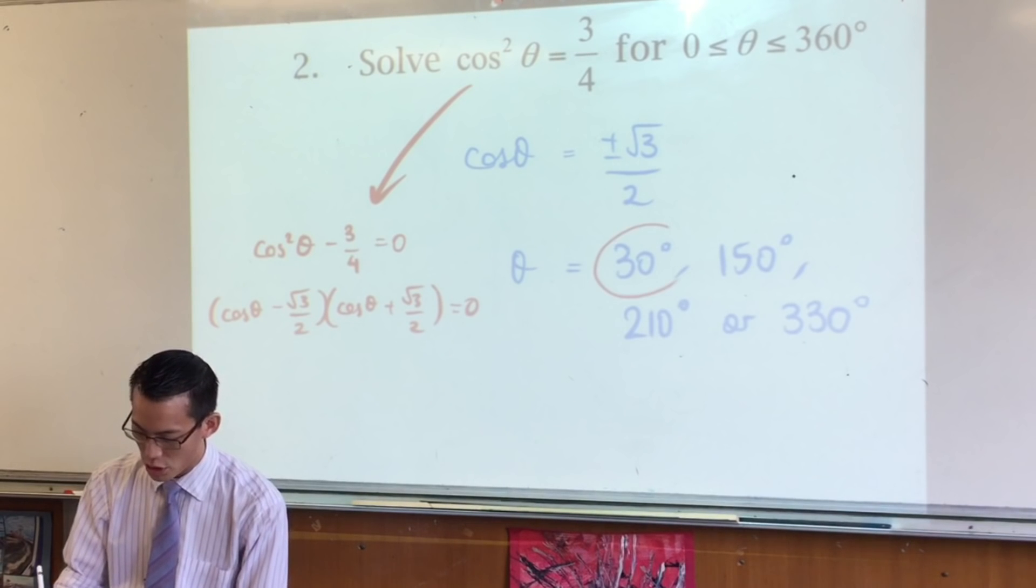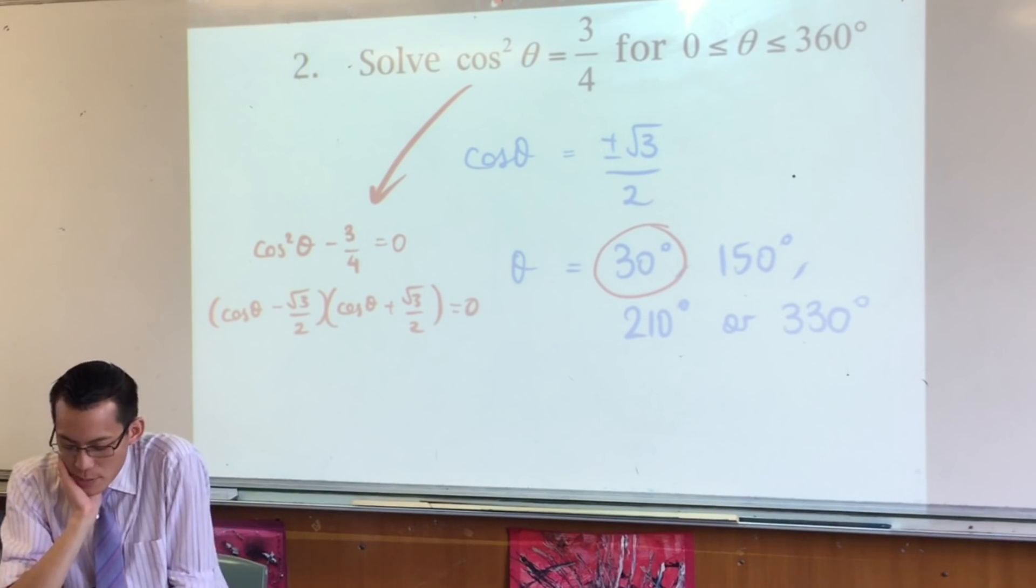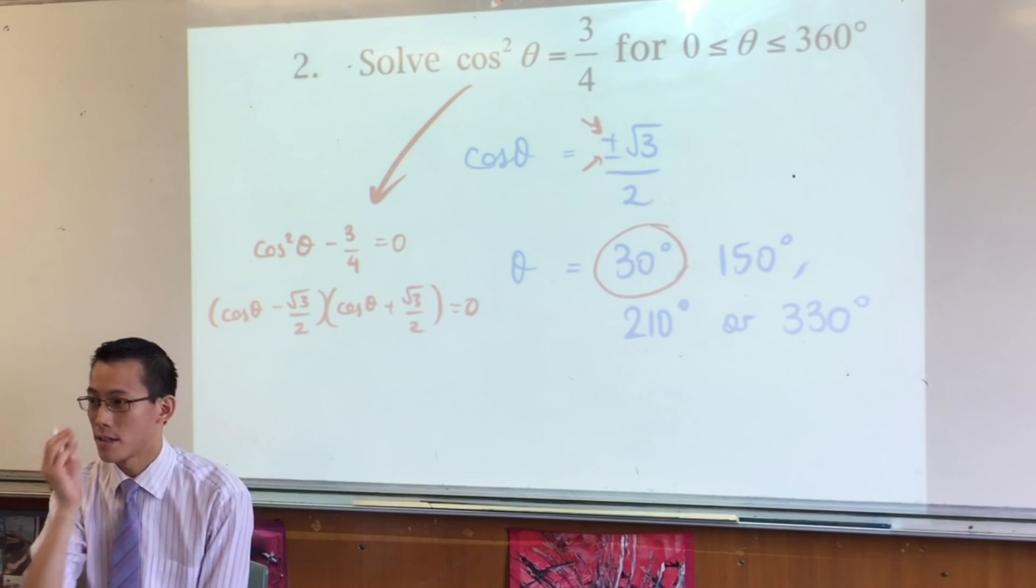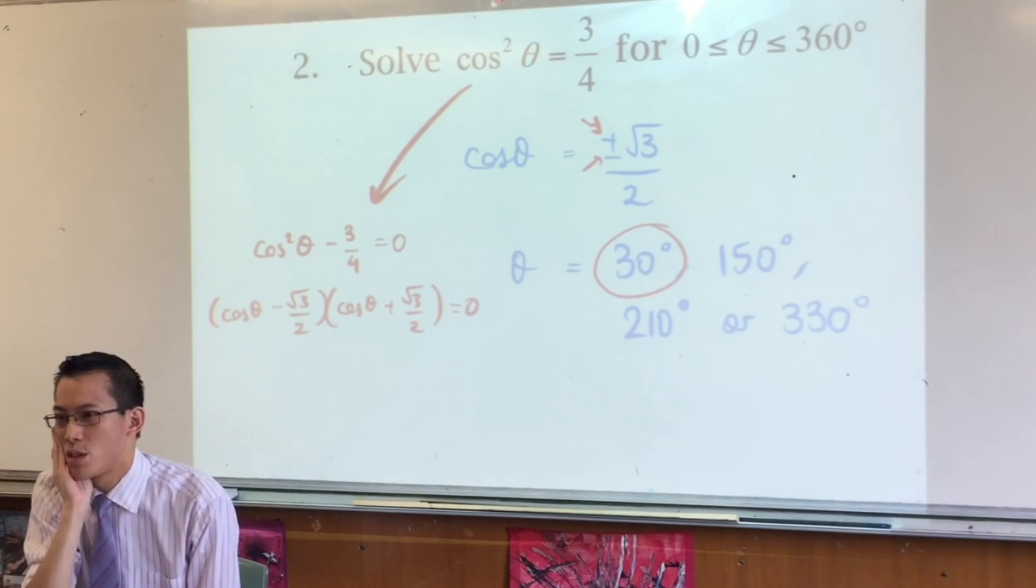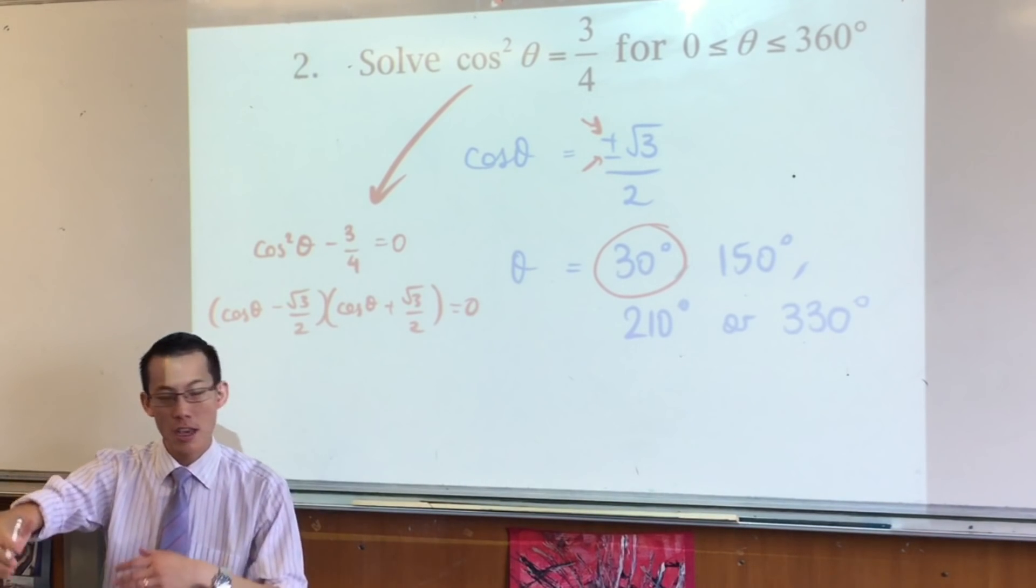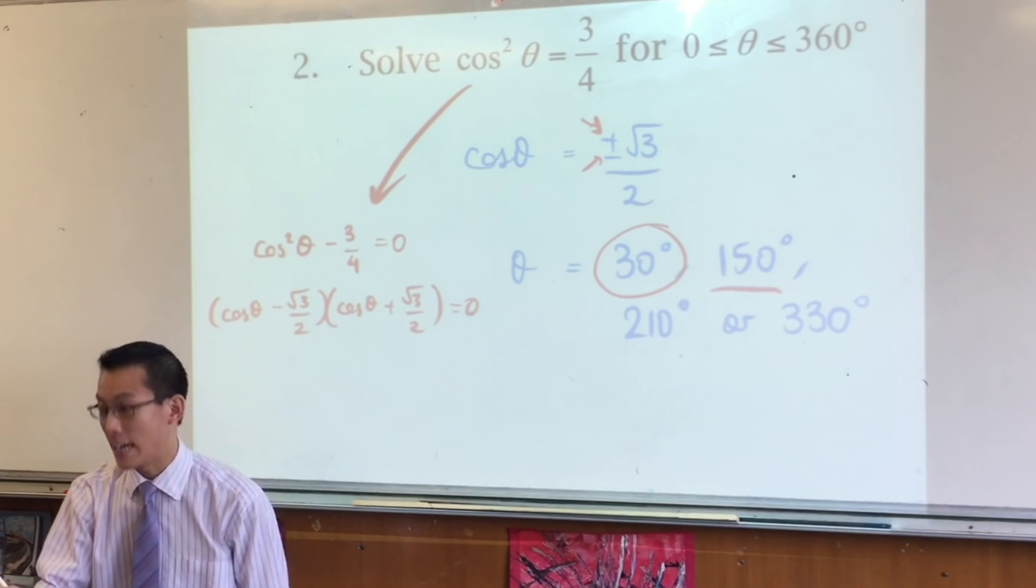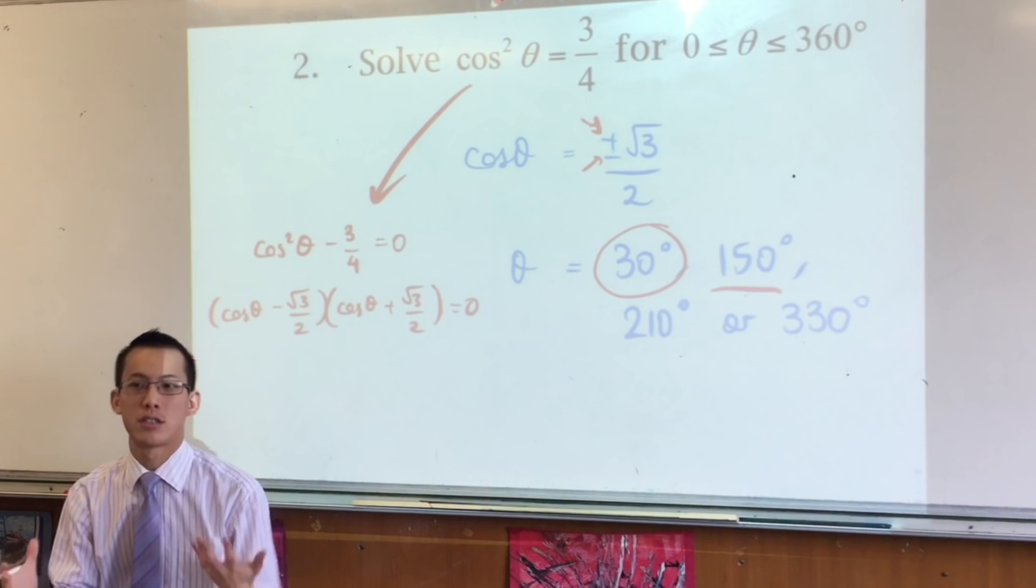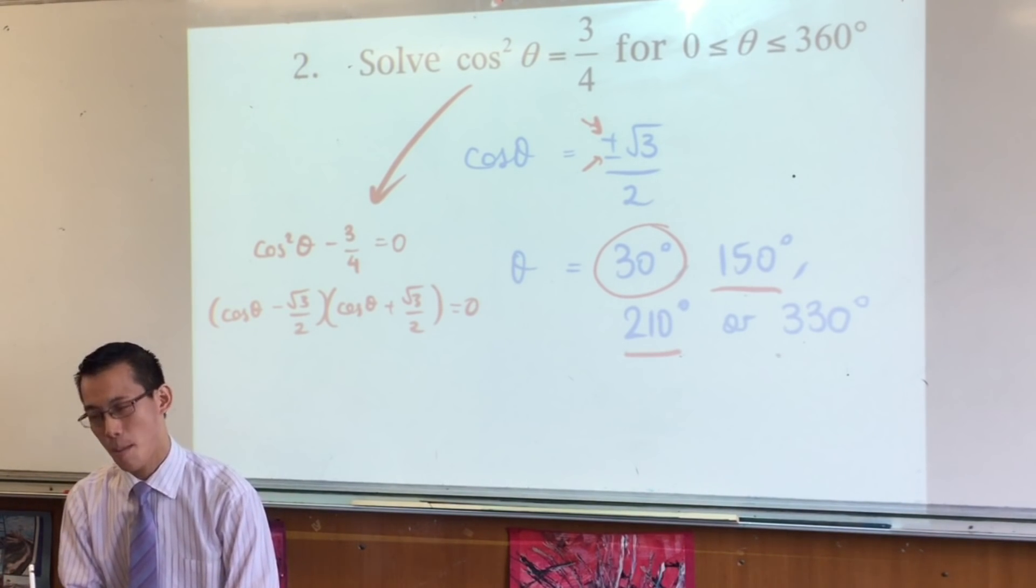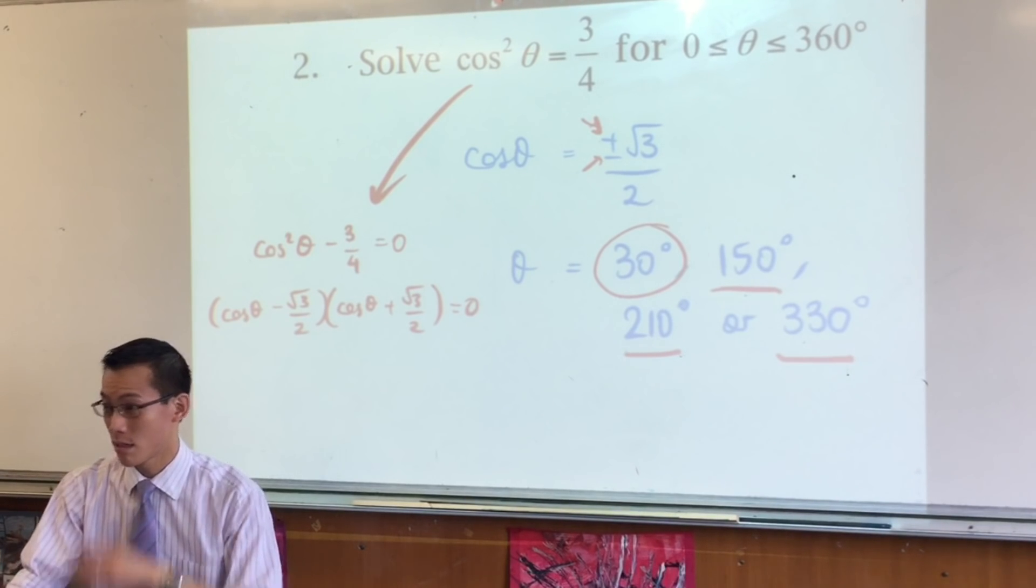So your exact value is going to be 30 degrees, and this actually makes it even easier for you. Since you've got plus and you've got minus, that means you don't need to worry about which quadrants you're in. You're in all the quadrants, right? You've got the acute angle, you've got the obtuse one, there it is, 180 minus 30, and then you've got the two reflex angles, 180 plus 30 and 360 minus 30. Does that make sense? Four solutions.